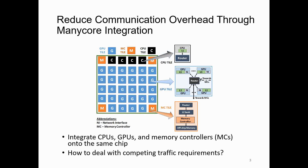To alleviate this issue, we can reduce the communication overhead through higher integration and bring the GPUs into the same mini-core system. Therefore, we will have systems that integrate CPUs, GPUs, and memory controllers, or MCs, on the same chip. However, with heterogeneous components sharing the same network-on-chip, how do you deal with competing traffic requirements, especially for these CNN workloads? This is the main focus of our work.